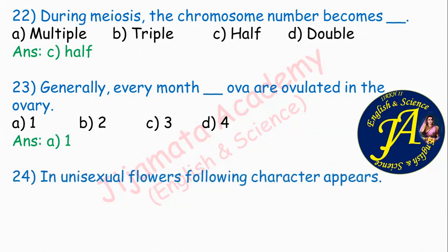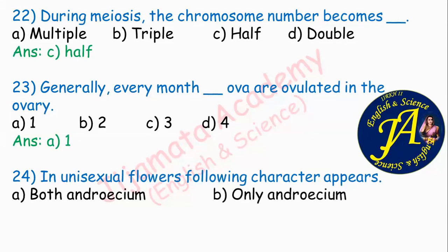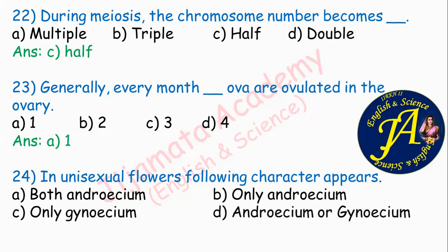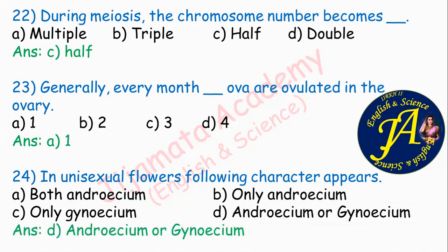In a unisexual flower, what character appears? Options are both androecium and gynoecium, only androecium, only gynoecium, or androecium or gynoecium. In a unisexual flower, only one of them is present — either androecium or gynoecium. Option D is correct: androecium or gynoecium. If androecium is present, it is a male flower; if gynoecium is present, it is a female flower. If both are present, it is a bisexual flower.